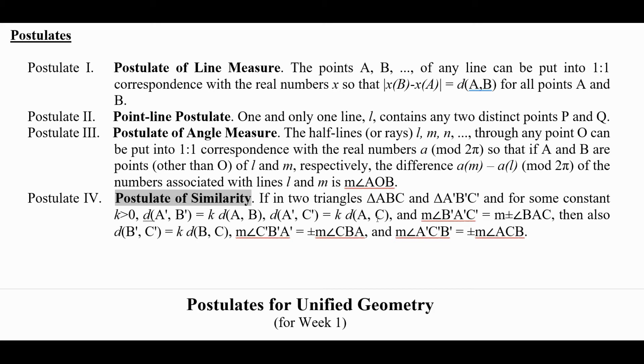distance from A' to C' is k times distance A to C, and the measure of angle A'B'C' is equal to ±the measure of ABC, then we also have the other sides are proportional and the other angles are congruent. So what this is basically is a side-angle-side similarity.